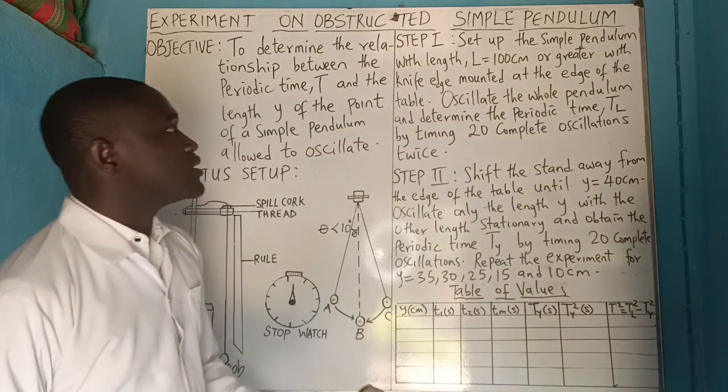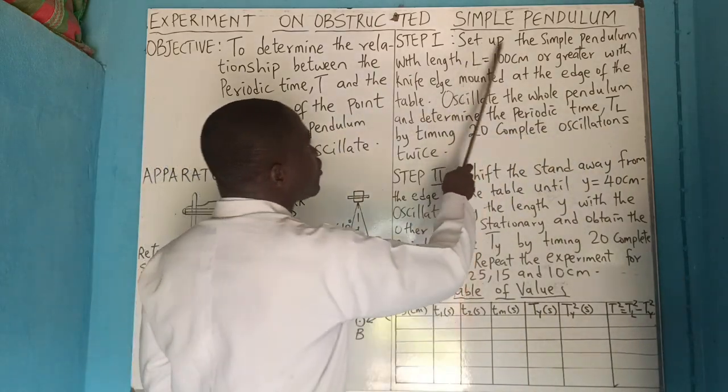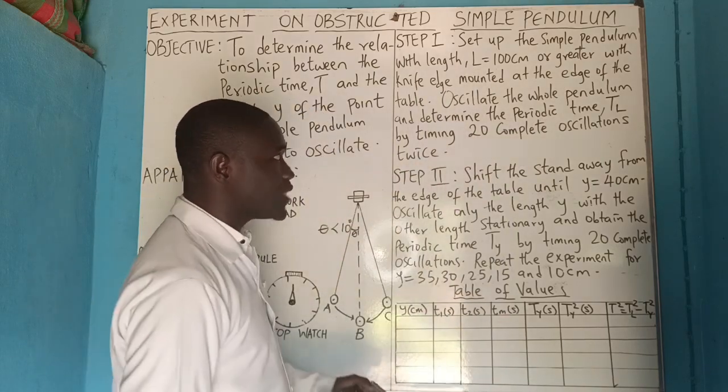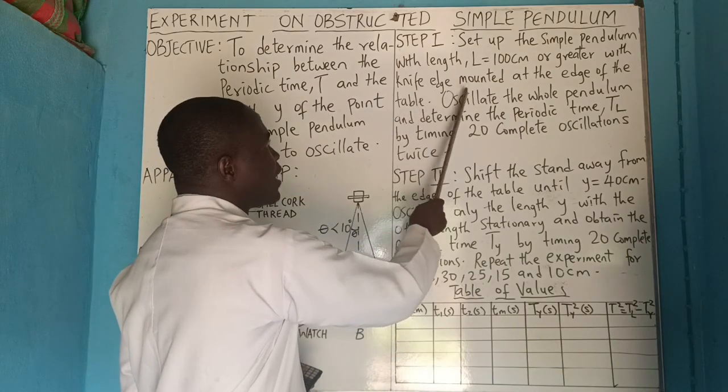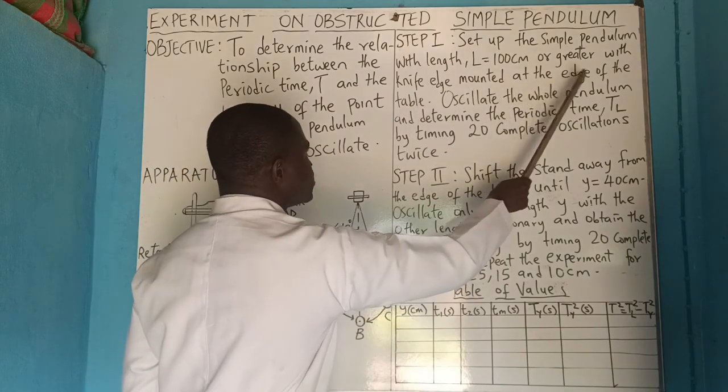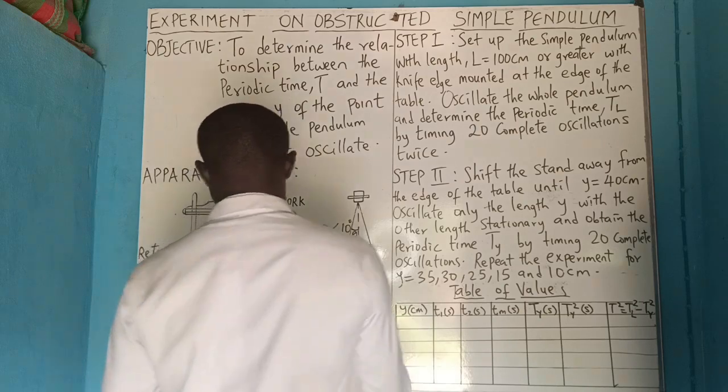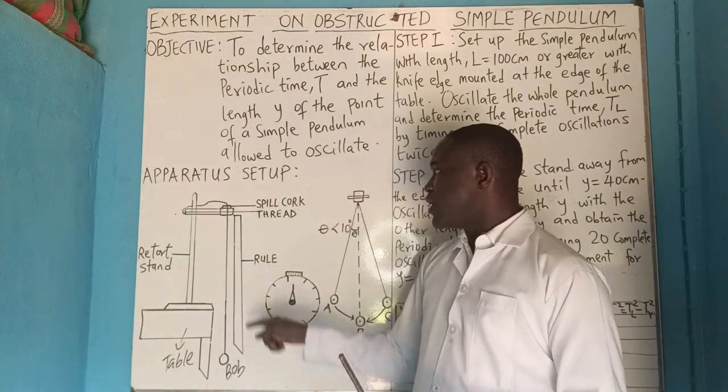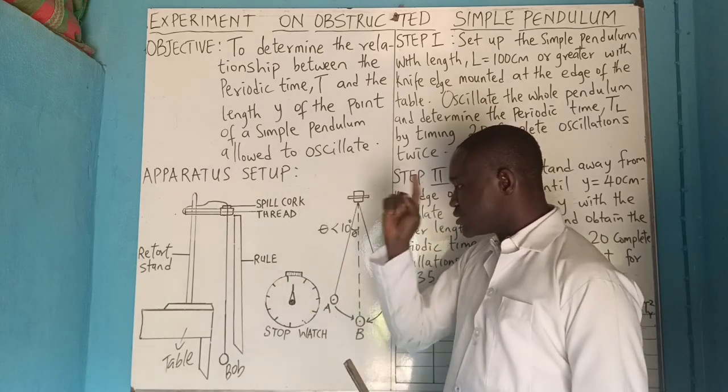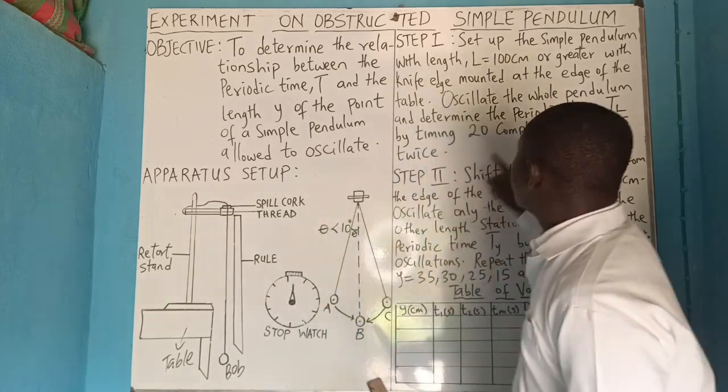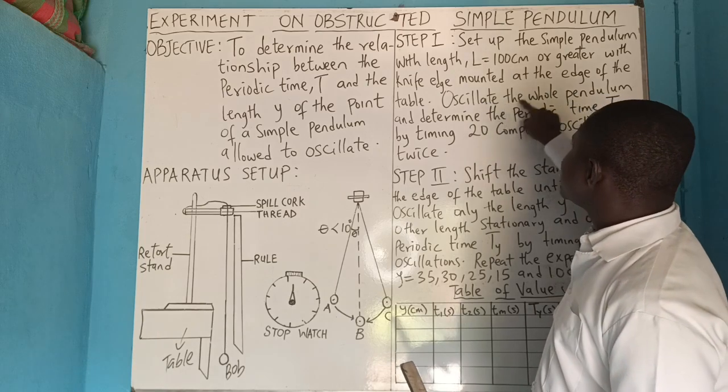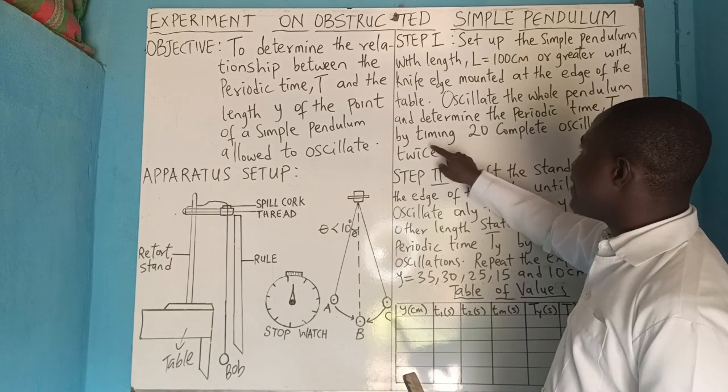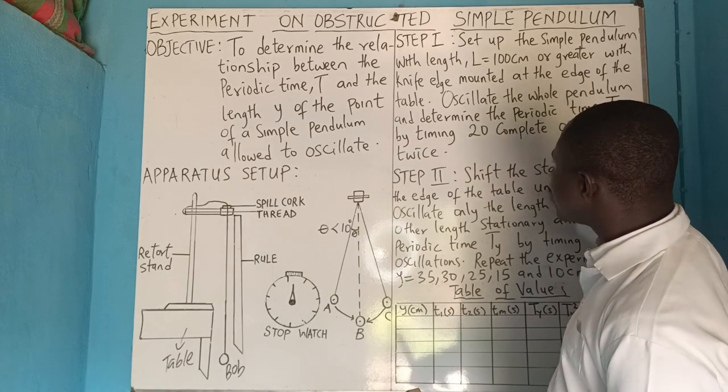Step one: Set up the simple pendulum with length L equal to 100 cm or greater, with knife edge mounted at the edge of the table. Then, oscillate the whole pendulum and time the periodic time TL by timing 20 complete oscillations twice.